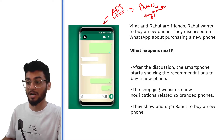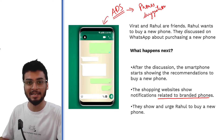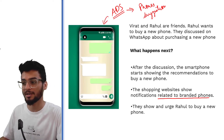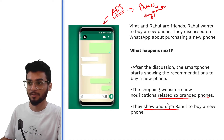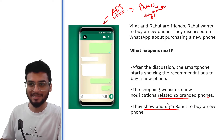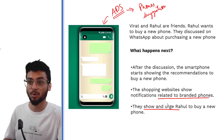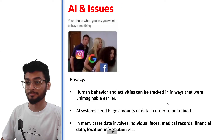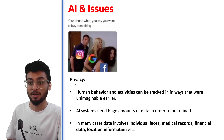The notifications on your app will also be related to branded phones. You will have suggestions on Amazon that if you want to buy a phone, this is a good one — you can add this to your cart. They show and urge Rahul to buy a new phone. This is a very common thing happening all over the world — if you are discussing anything on WhatsApp or any other messenger, directed ads are coming at you. This is called the data privacy issue related to AI.